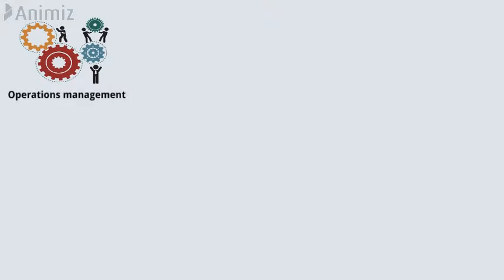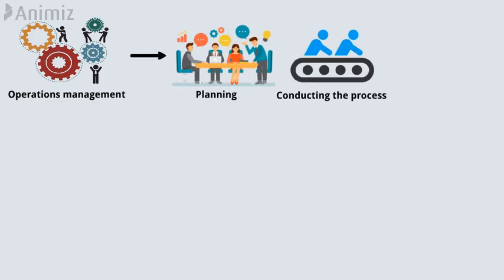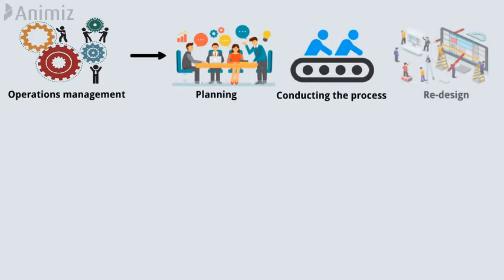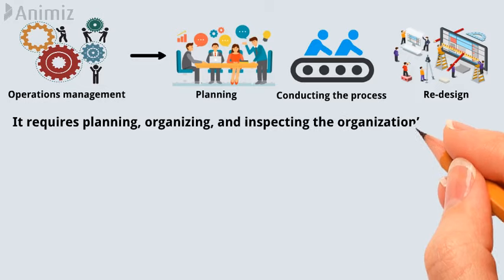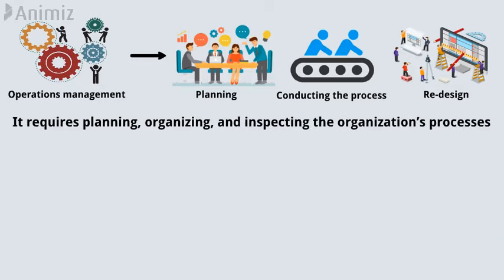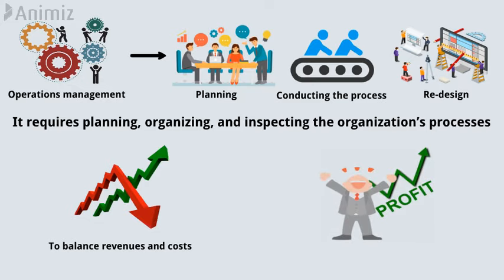Operations management is an area of management involved in planning, conducting the process of production and redesigning business operations in the production of goods or services. It requires planning, organizing, and inspecting the organization's processes to balance revenues and costs to get the highest possible operating profit.